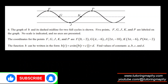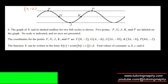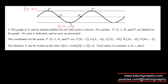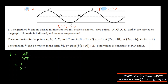Let's do one more similar practice problem. Feel free to pause and try it yourself. Labeling the key points: F is at (0, −2), J is at (2π, −10), and P is at (4π, −2). The period goes from 0 to 4π, so B = 2π / 4π = 1/2.